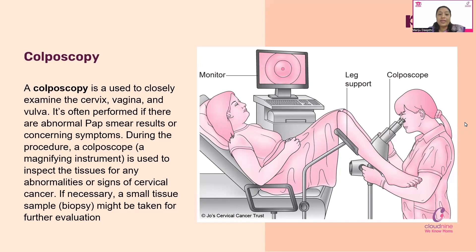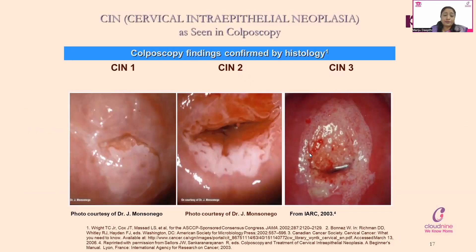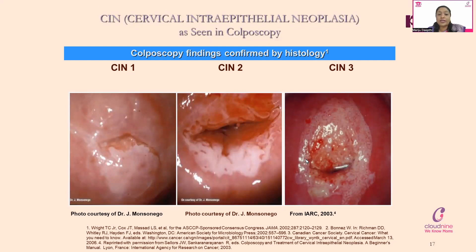These are some precancerous lesions — not cancer per se, but precancerous. We are looking at cervical intraepithelial neoplasia seen on colposcopy — photographs of abnormal cervixes showing ulceration and growth, classified as Type 1, Type 2, and Type 3. After this, progression moves into cervical cancer Stage 1 and Stage 2.